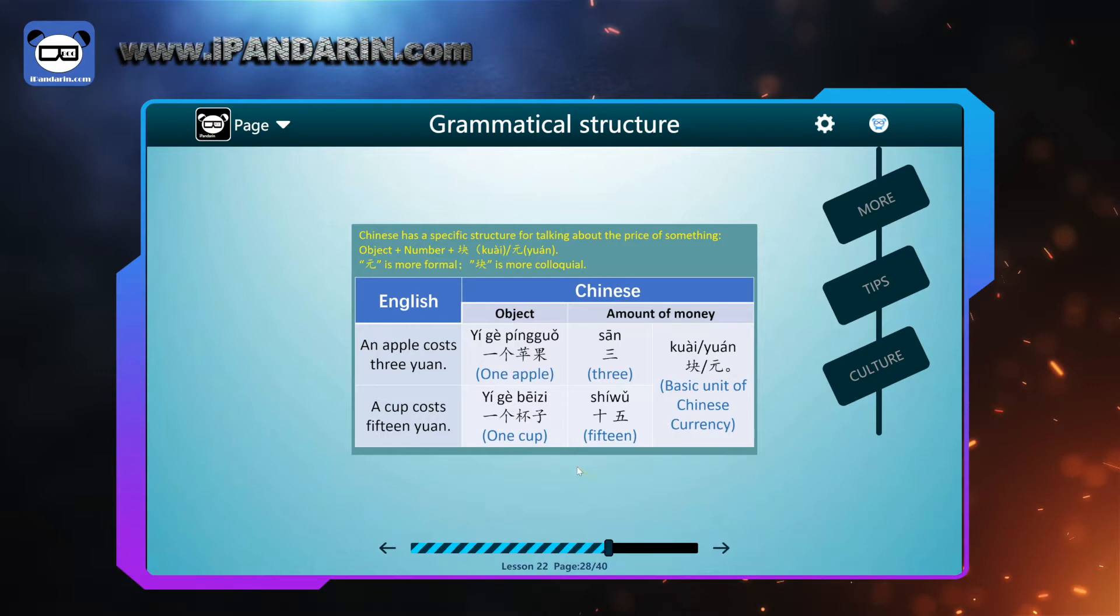What to answer, to give the price. We have a very specific structure for talking about the price of something. The object, with the number, kuai, or the thing, and then we state the price. An apple costs three yuan. 一个苹果三块, or 三元. Kuai and yuan are the same, but yuan is much more formal. Kuai is more common and popular. A cup costs fifteen yuan. 一个杯子十五块, or 一个杯子十五元.